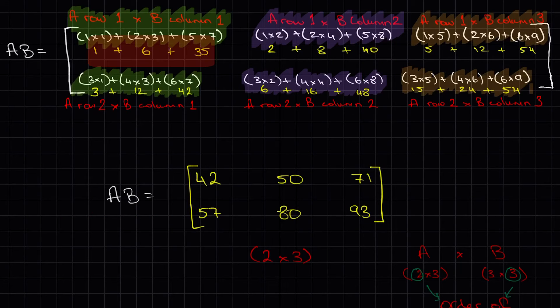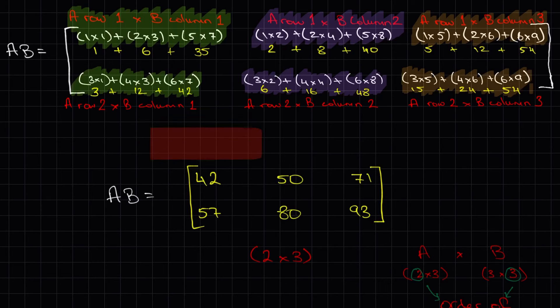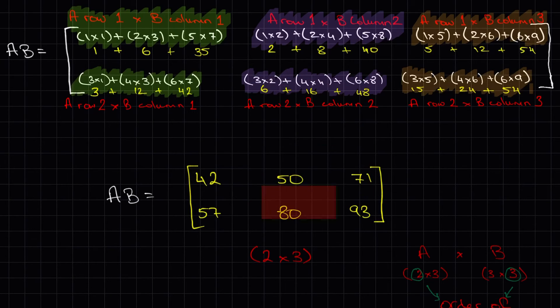And this is what we end up with. Each line of working out, we simplify and eventually we have each individual element in matrix AB. Now you'll notice that the order of our answer matrix can be seen by looking at the orders of the original matrices A and B. It's the outside numbers, two by three.